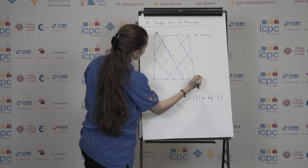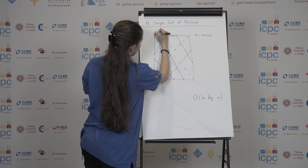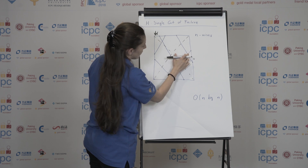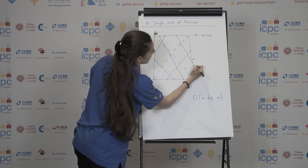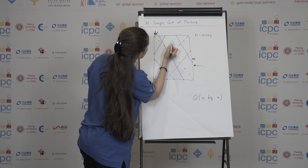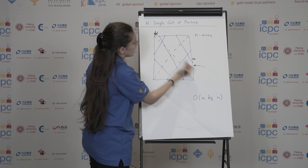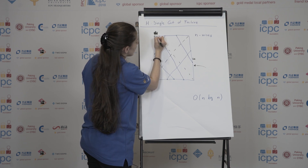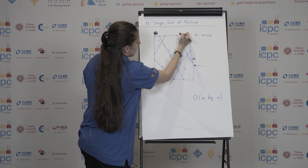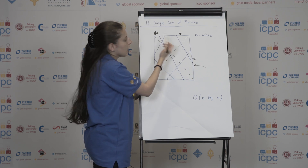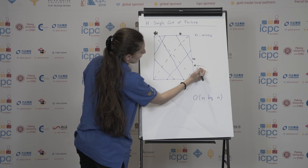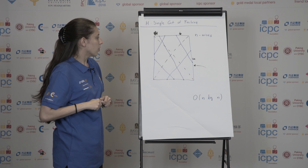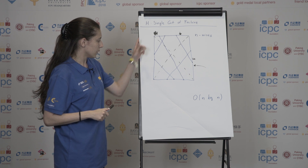If at some point the count equals n, it means we have constructed the cutting line. However, if the second pointer advances to a position where a wire has both endpoints inside, then this cannot be the single cutting line. We continue until we either find a single line or finish, in which case the answer is two diagonals.